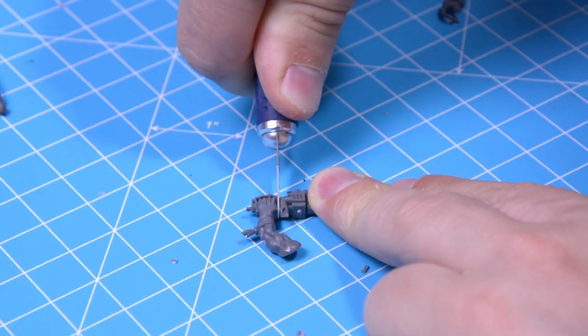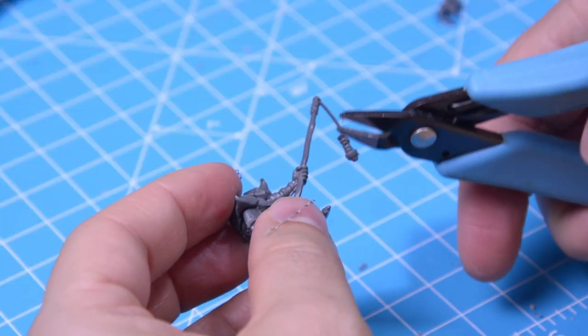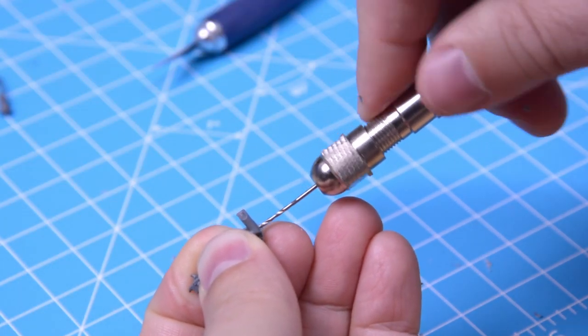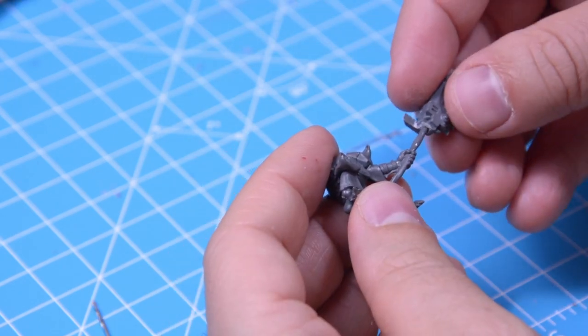For the weapon I took an orc chopper and chopped off the hand. Then I cut off the end of the stick he's holding. There wasn't much surface area to glue together, so I drilled a hole for the stick in the chopper and glued them together.